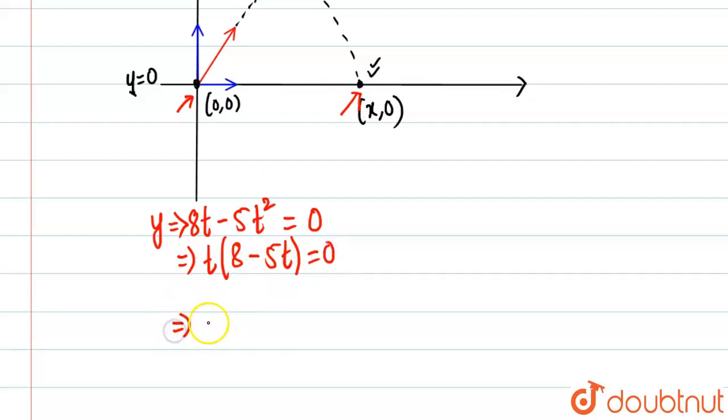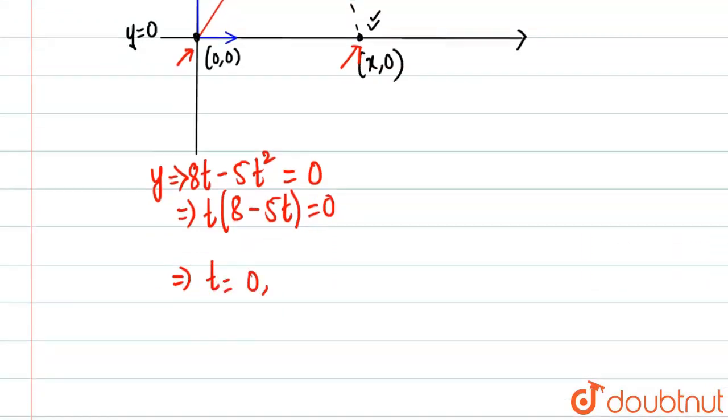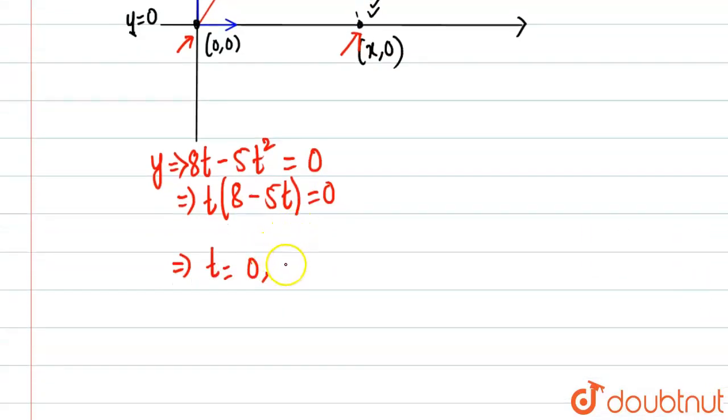Of course, so we'll have t will be equal to 0. There are two solutions for this: 8/5. So 8/5 is basically the time of flight.